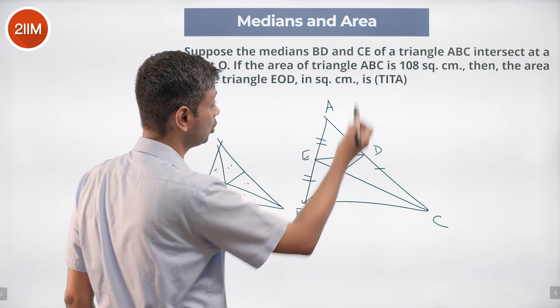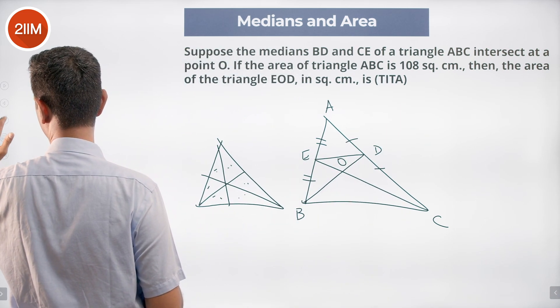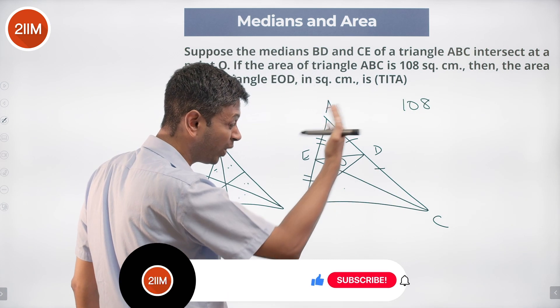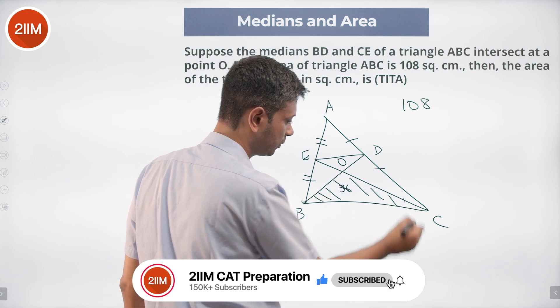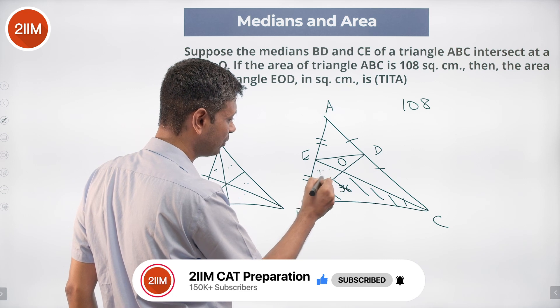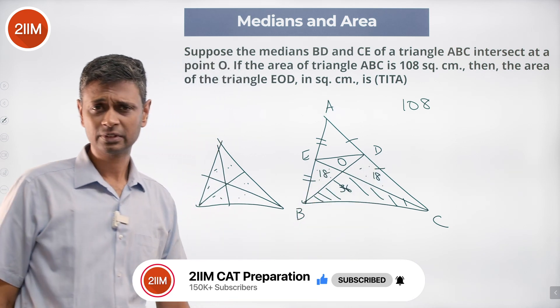So the total area is 108. This will be one third of that, 36—that's BOC. This one will be half of that, 18, and this one will be half of that, 18.